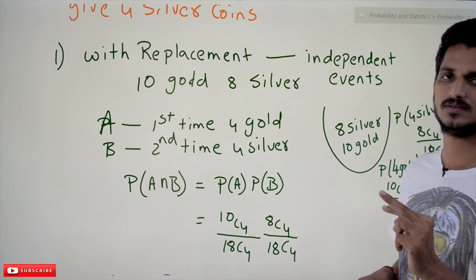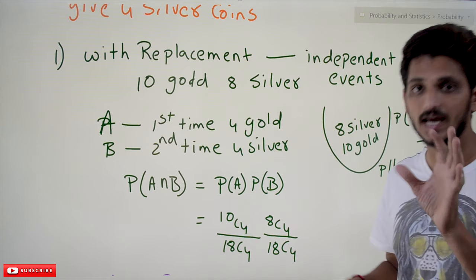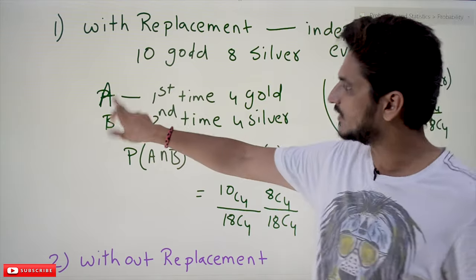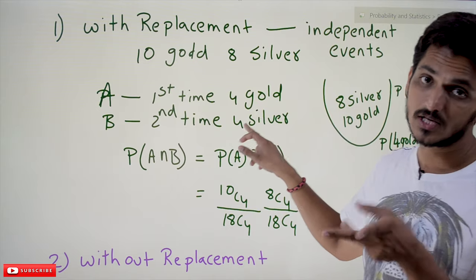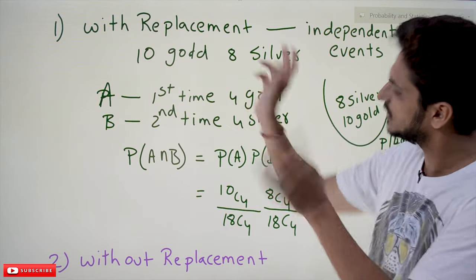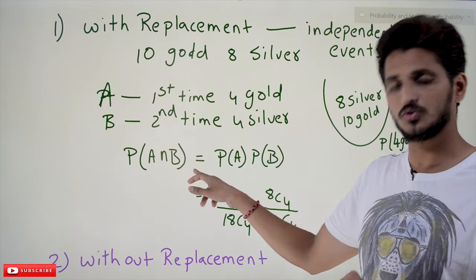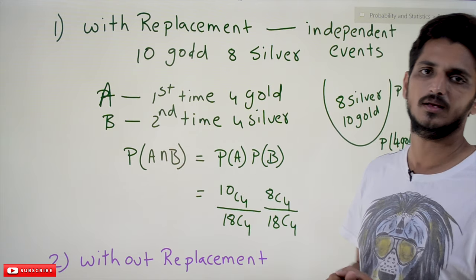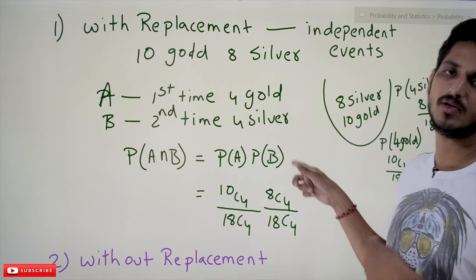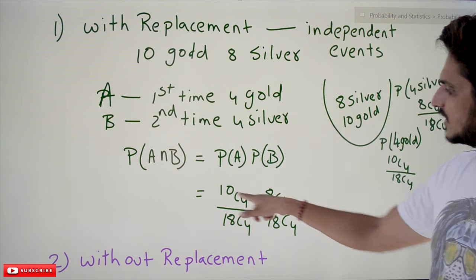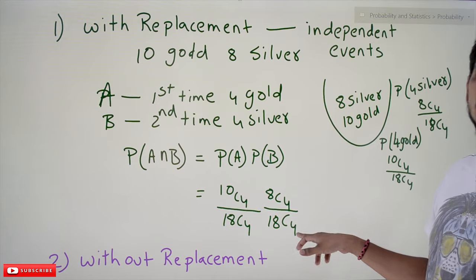Our events are: A = first time select four gold coins, B = second time select four silver coins. With replacement, the events are independent. So the probability of A and B equals probability of A multiplied by probability of B. Probability of A is 10C4 divided by 18C4; probability of B is 8C4 divided by 18C4. This is the probability value for the with-replacement case.